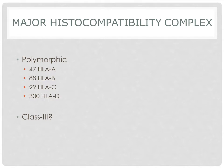The genes for MHC are highly polymorphic and diverse. For example, there are at least 47 HLA-A genes, 88 HLA-B genes, 29 HLA-C genes, and more than 300 HLA-D genes.